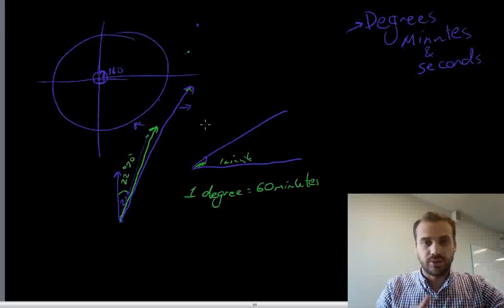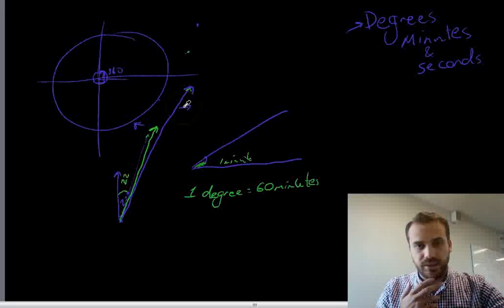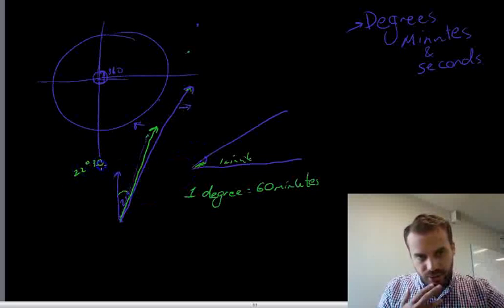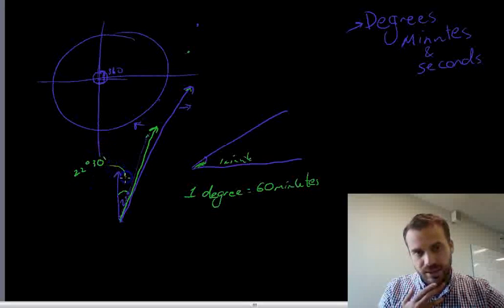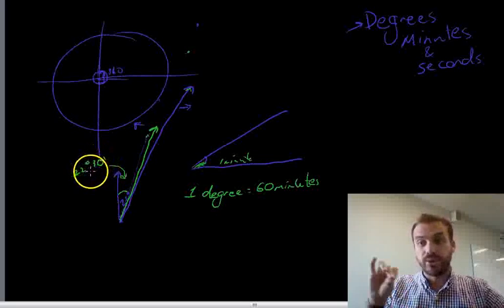my new course is 22 degrees and 30 minutes. Now, that might look confusing. 22 degrees 30. Probably should draw that a little better. 22 degrees 30 minutes. See my little apostrophe there?